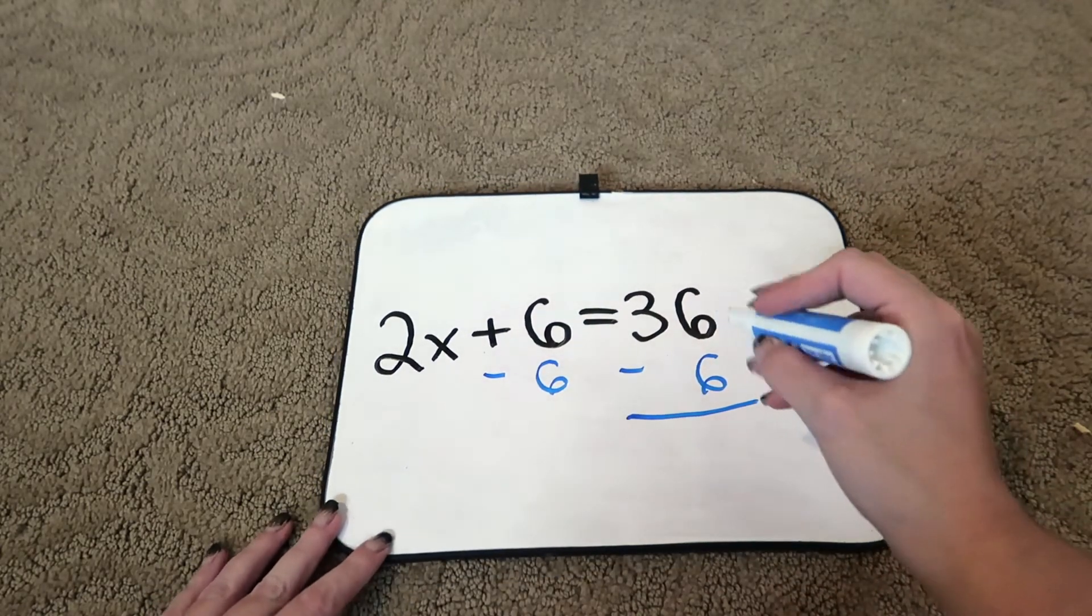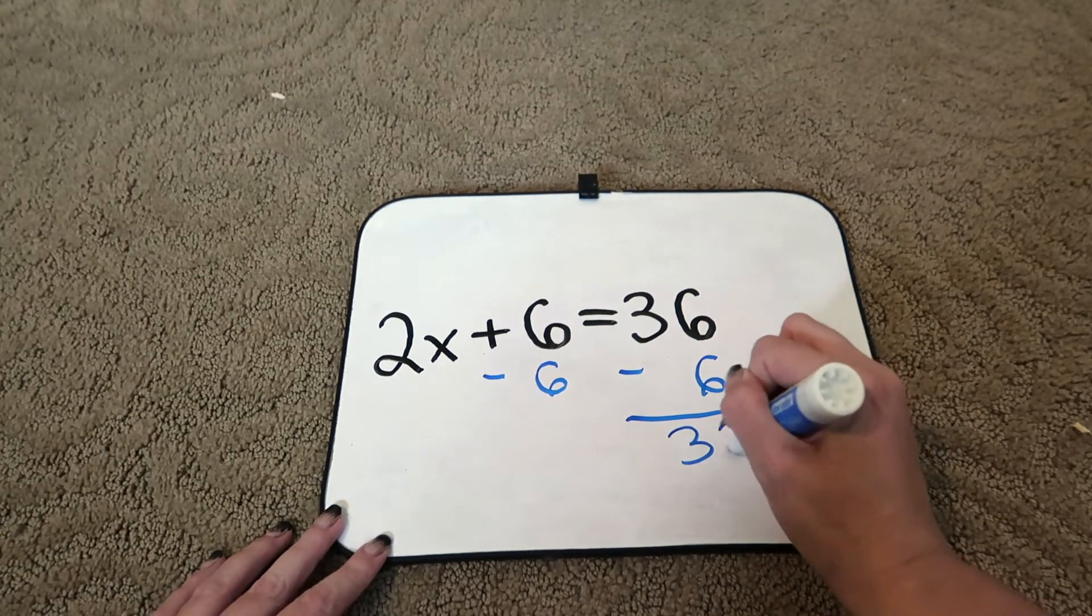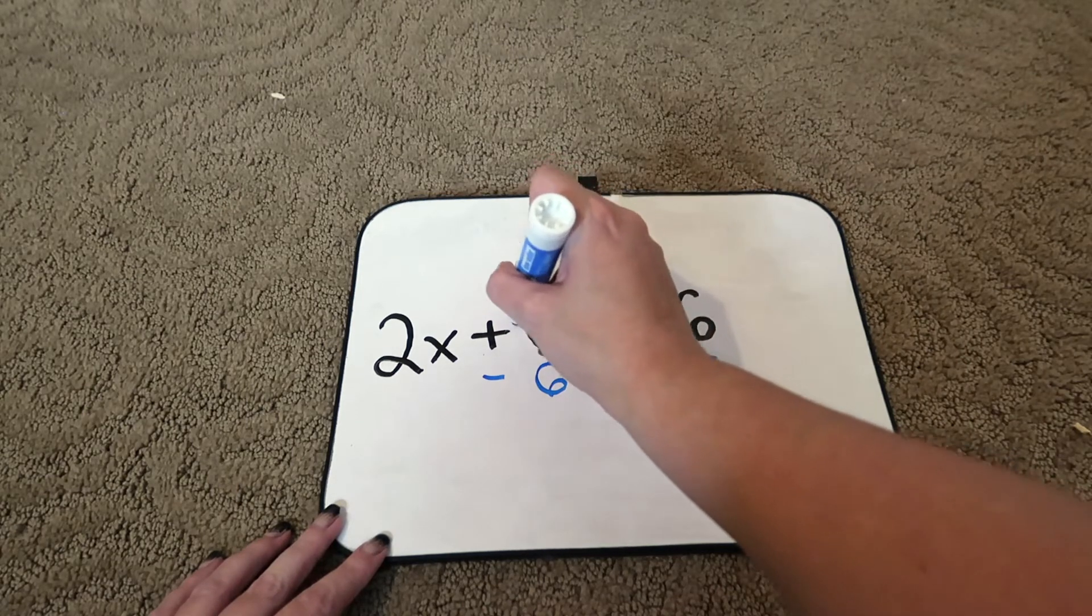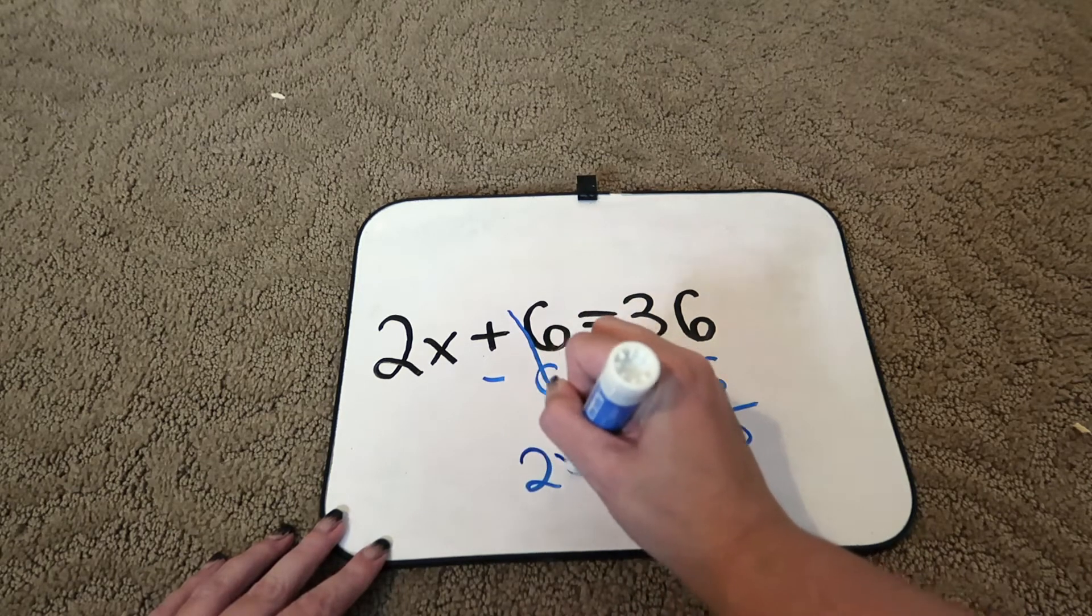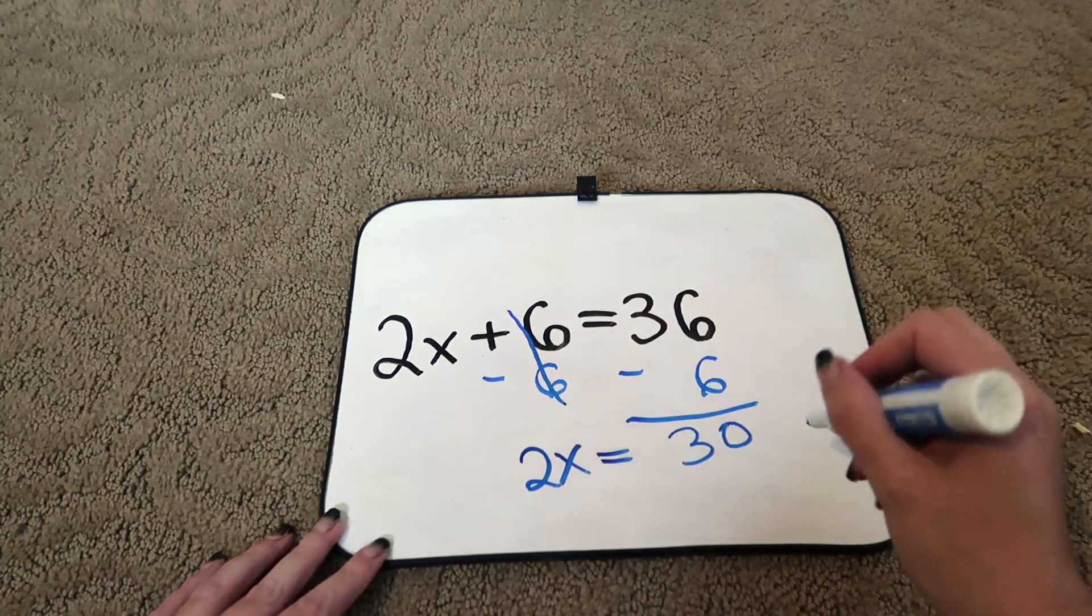36 minus 6 is 30. 6 minus 6 is 0. So now we have 2x equals 30.